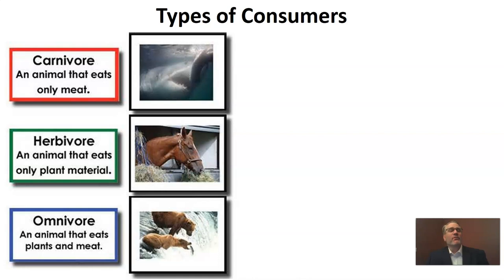There are three different types of consumers. Carnivores are animals that eat mostly only meat. Herbivores are animals that eat mostly only plant material. And omnivores are animals that eat both. Remember, plants make their own food, so you won't find plants in these consumer categories much. Some exceptions exist, like carnivorous plants or cats that eat grass, so we use these terms as generals.